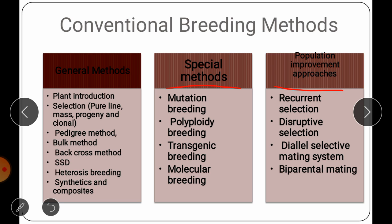General breeding methods are those most commonly used for genetic improvement of various crop plants. These include plant introduction; selection — comprising pure line selection, mass selection, progeny selection, and clonal selection; and then pedigree method, bulk method, back cross method, single seed descent method, heterosis breeding, synthetic, and composite varieties.